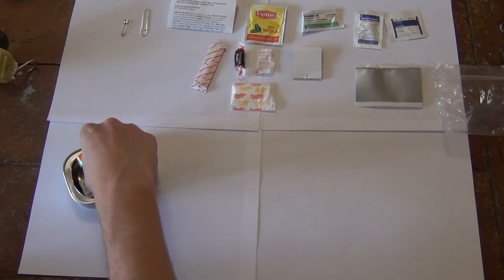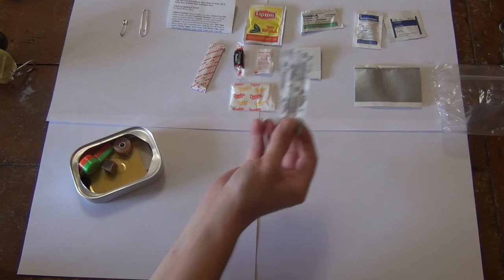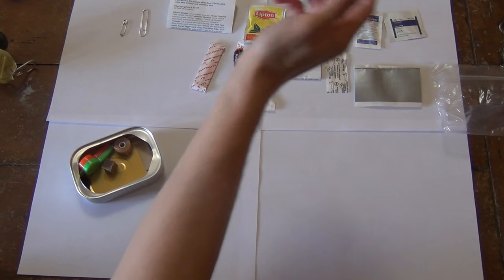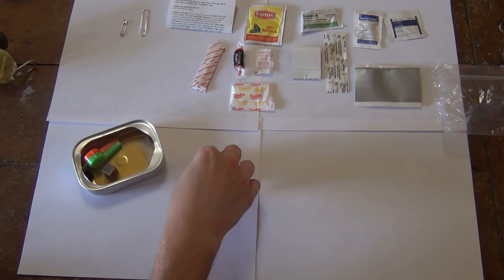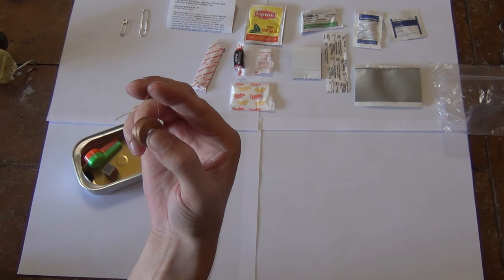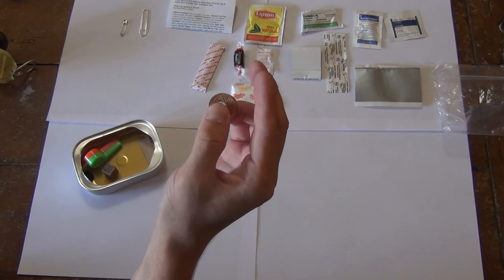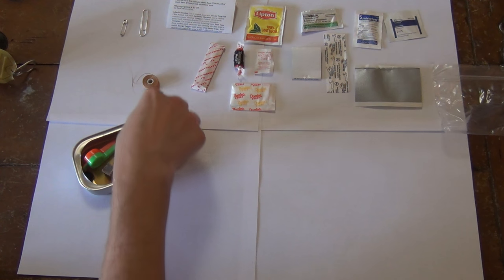Just one band-aid it looks like. I'm amazed there's not more than just one band-aid. Here we have some thread. It's fairly thin, but it's not like super thin. You could probably even use this as fishing line unless they gave us some fishing line in here. I don't know if they gave us any fishing hooks either.